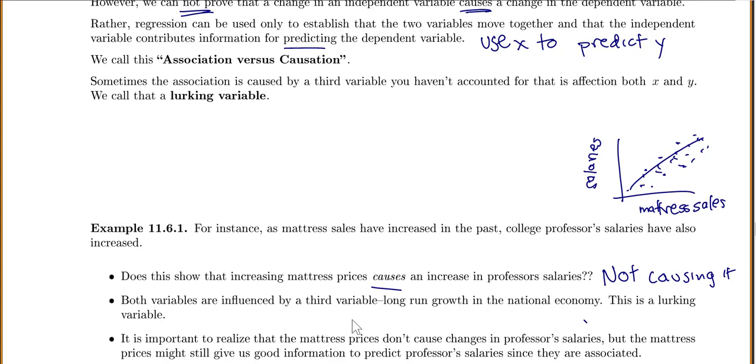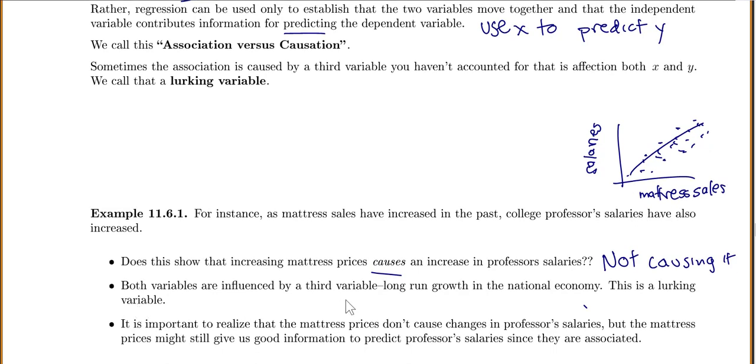Instead, both variables are influenced by a third variable, the long run growth in the national economy. This is called our lurking variable. So the national economy is our lurking variable. It's important to realize that mattress prices aren't causing the changes in professor's salaries, but they might still give us good information to predict the professor's salaries because they're associated.